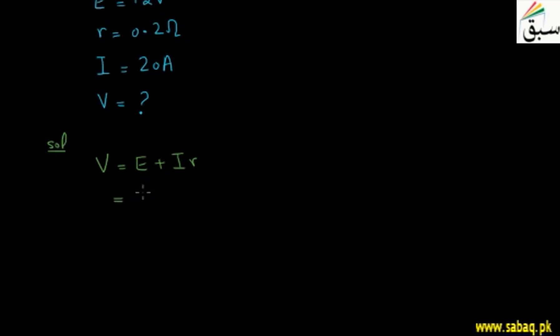E is 12V plus current value is 20A and resistance value is 0.2 Ohm. So when I calculated here, I have value is 12V plus 4 Ampere into Ohm.